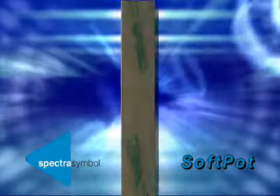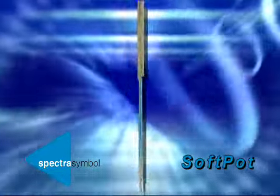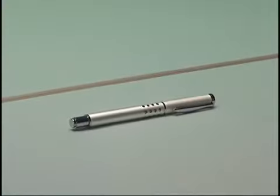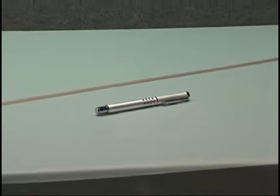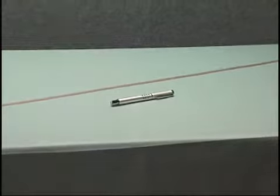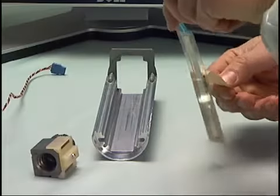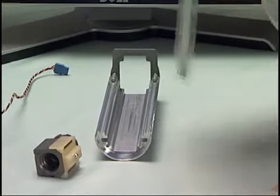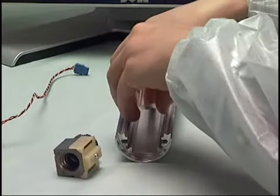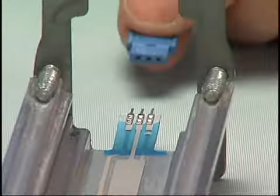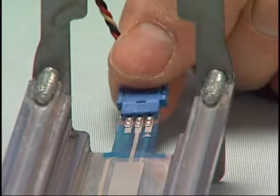With its simple and elegant design, the Spectra Symbol Soft Pot sensor has a form factor of less than half a millimeter in height and is produced in lengths from 10 millimeters to two meters. The Soft Pot potentiometer is so simply mounted it saves labor costs in addition to the economic product price. It is a sensor for tracking position.